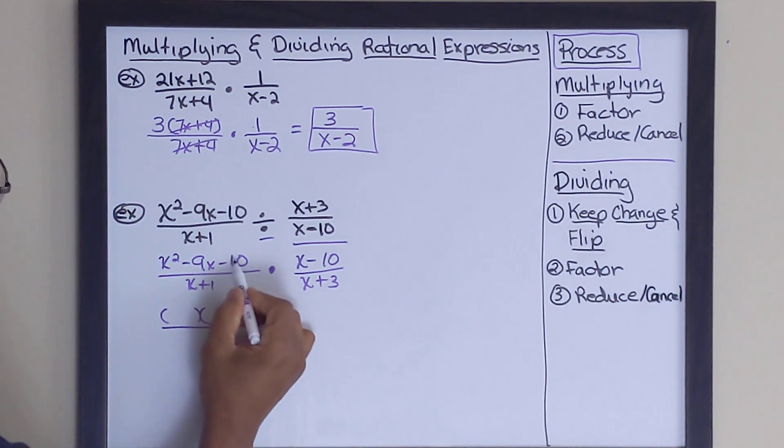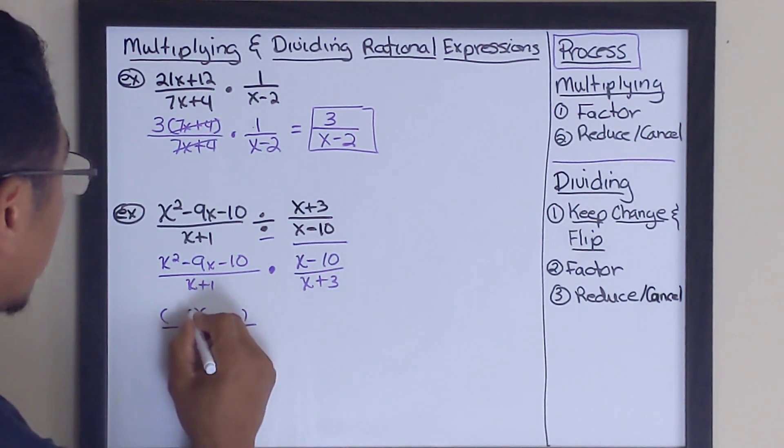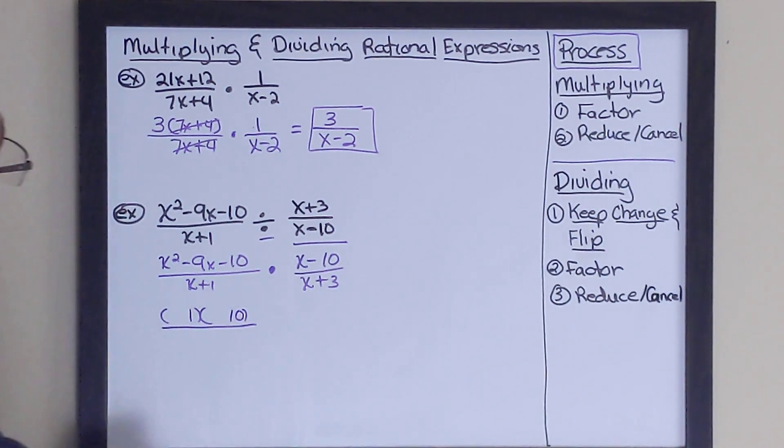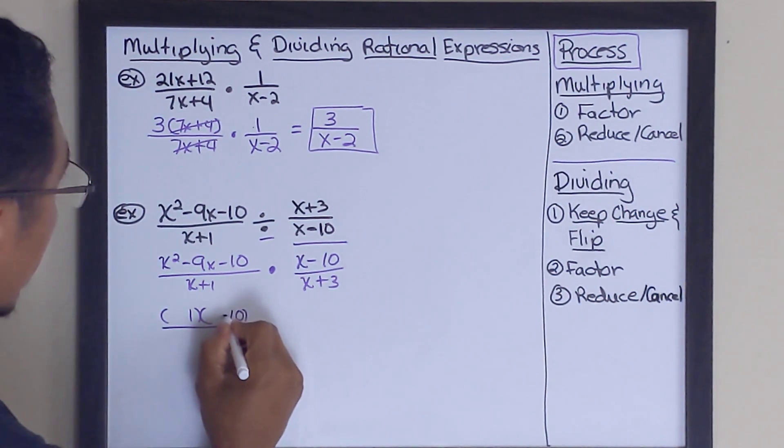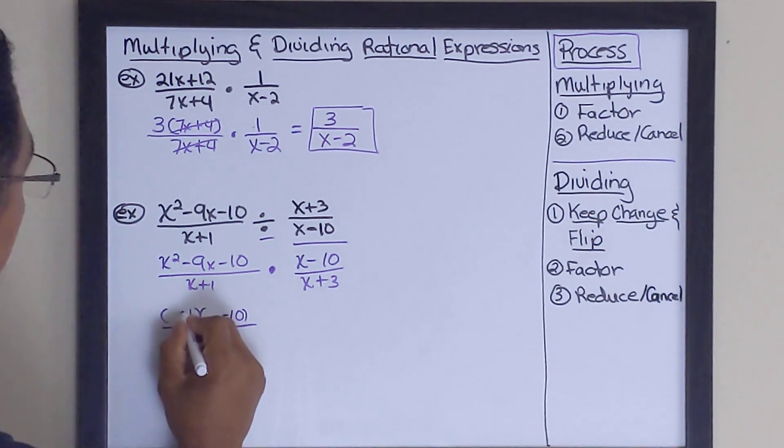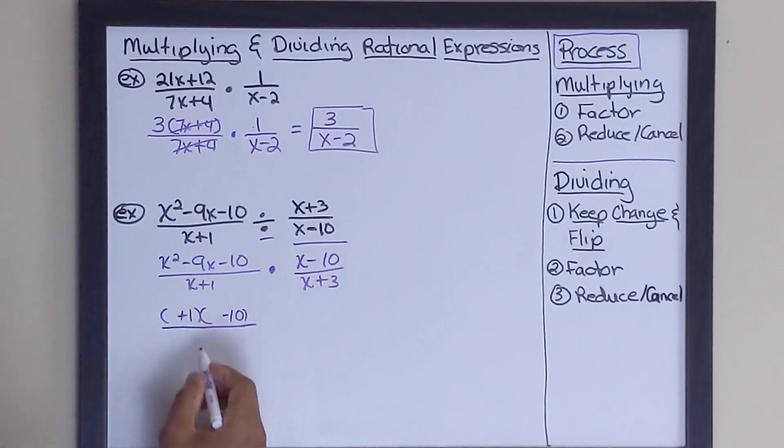What we're looking for is two numbers. When we multiply them together, we'll get a negative 10. And when we add it together, we get a negative 9. So those two numbers are going to be 1 and 10. And this has to be negative. This has to be positive. So when we multiply 1 times negative 10, we get negative 10. And when we add negative 10 plus 1, we get a negative 9.